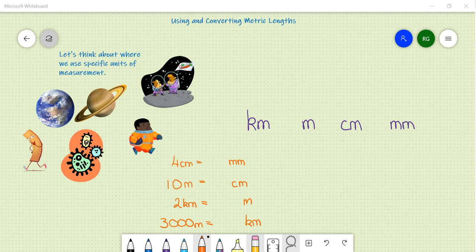Firstly, it's important to think about where we use specific units of measurement. So I've got a couple of little pictures there. If we were talking about the distance between planets and we wanted to explain to someone how far away Saturn was from Earth,